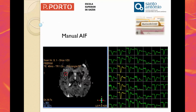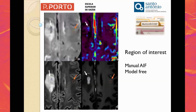Here we have an example of the manual IF method used in this work. As we can see, you select a ROI — the red square in the image — placing it in the middle cerebral artery of the contralateral hemisphere to the lesion. After this, we select the squares that better represent the signal decay, shown here in yellow.